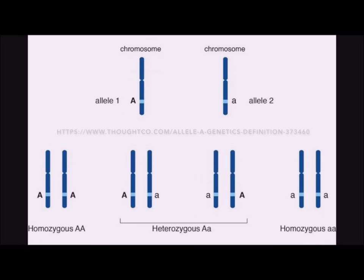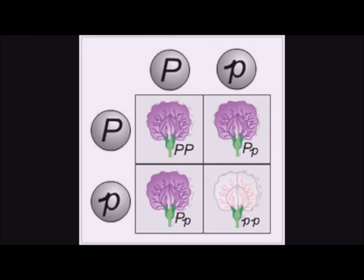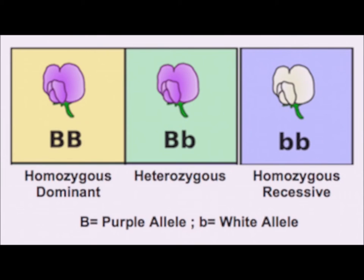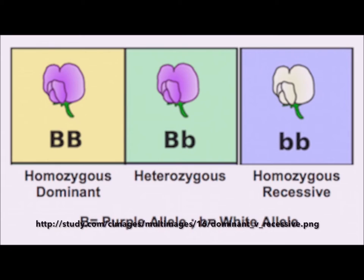The pair of alleles present at a given locus defines the genotype of an individual. When both alleles are the same, the individual is said to be homozygous, and when the alleles are different from each other, it is said to be heterozygous. In the case where one allele masks the expression of the other, the allele that is expressed is referred to as the dominant allele, whereas the allele that is masked is called the recessive allele. A recessive allele will only be expressed if the individual is homozygous for that allele, and is called homozygous recessive.